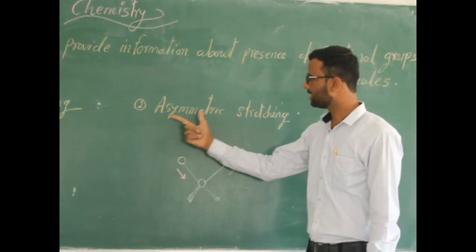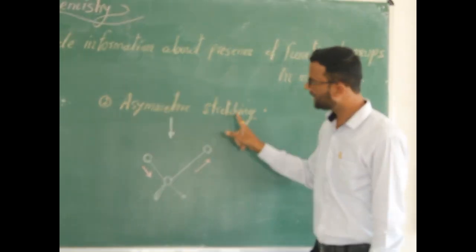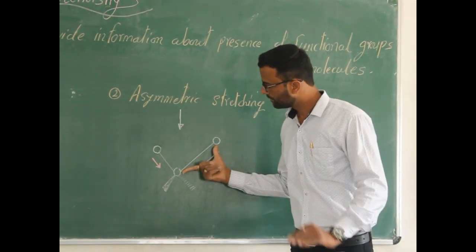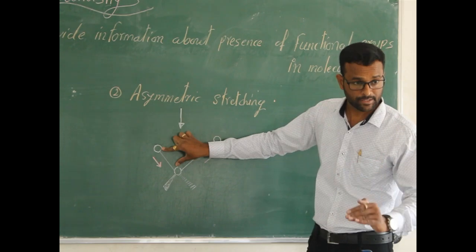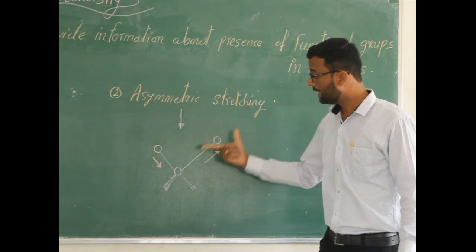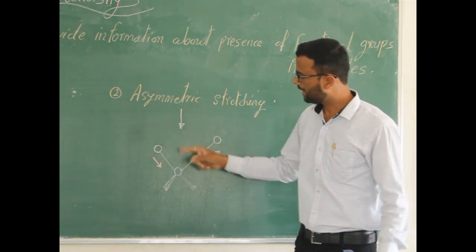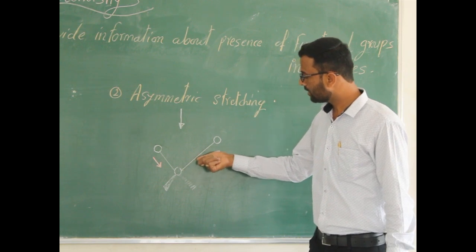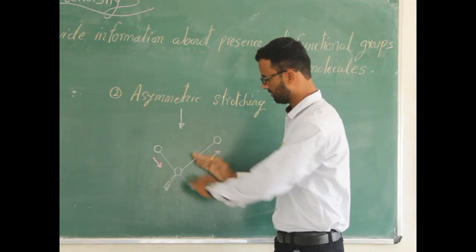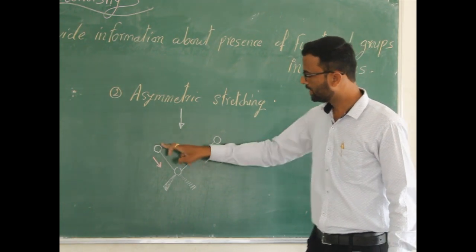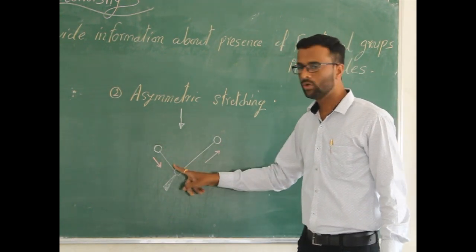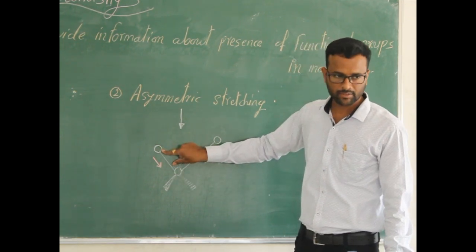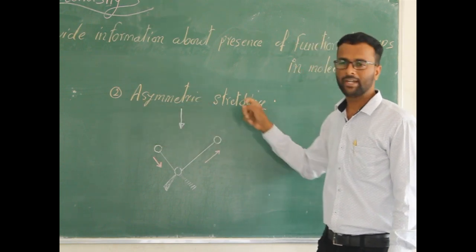In asymmetric stretching, the length of one bond increases and the other bond decreases. The direction — or movement — of atoms is in opposite directions. This one moves up, that one moves down. So one bond length increases and the second bond length decreases — that is asymmetric stretching.